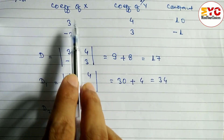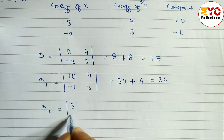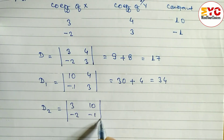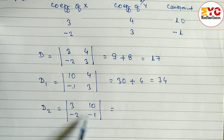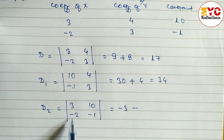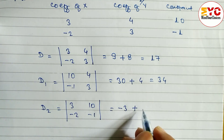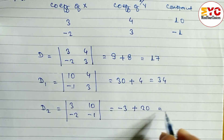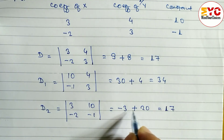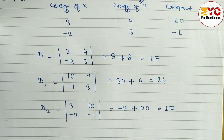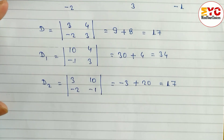To find D2, we take the coefficients of x and the constant numbers: 3, minus 2 and 10, minus 1. The main diagonal is 3 into minus 1, which is minus 3. The other diagonal is minus 2 into 10, which is minus 20, but with the minus from the formula it becomes plus 20. So 20 minus 3 equals 17, giving us D2 equals 17.